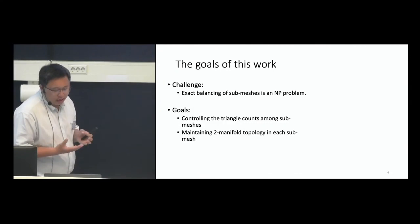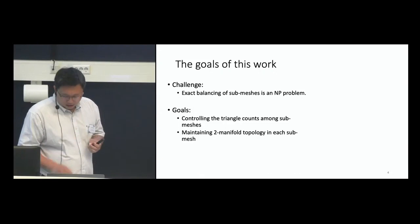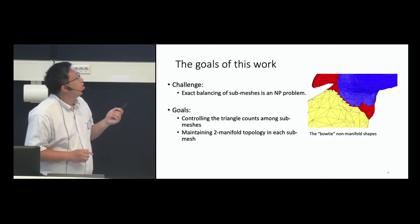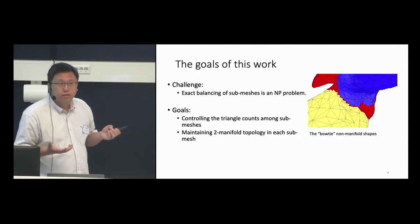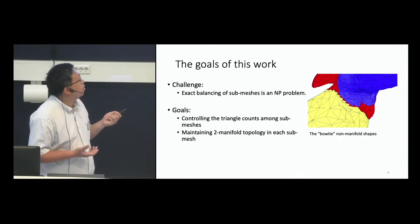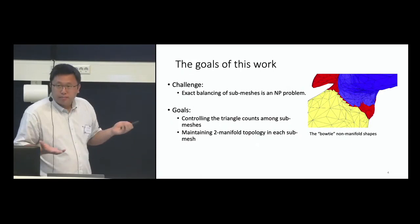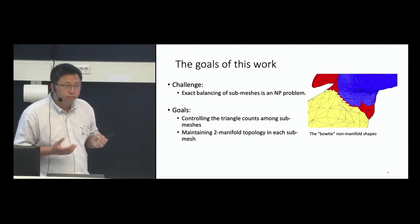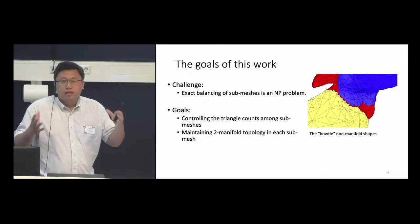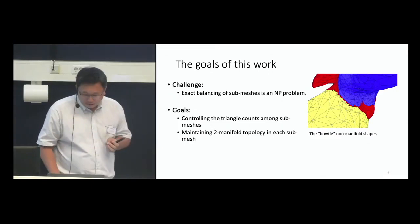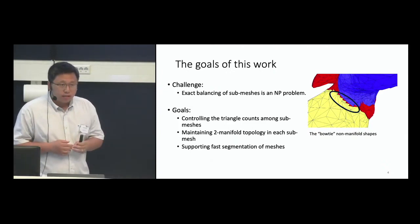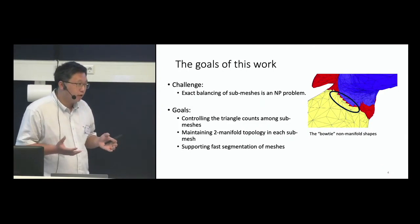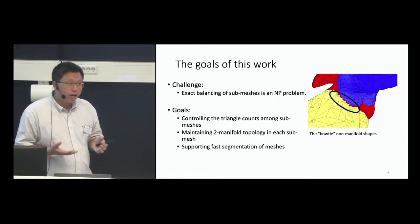The manifold topology goal is critical because without it we may end up with some triangles that are continuously connected but only through points, not edges — known as the bow tie issue. If you do level of detail simplification, those triangles would be considered boundary triangles that cannot be further simplified. We want to minimize this issue to get a nice mesh patch. Also, since different GPUs have different configurations, the algorithm should be fast enough to allow reconfiguration into different numbers of submeshes.